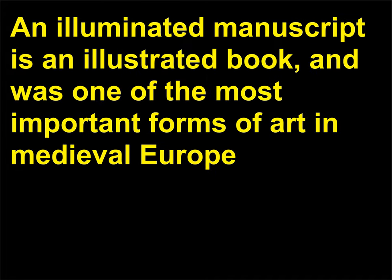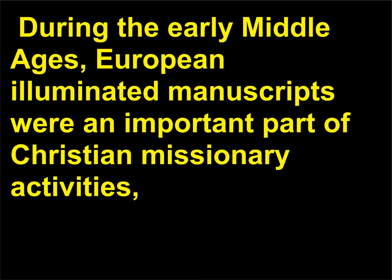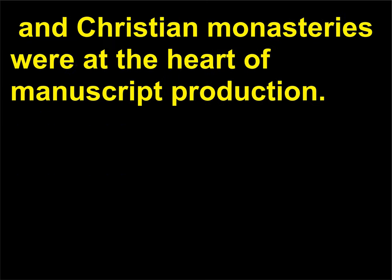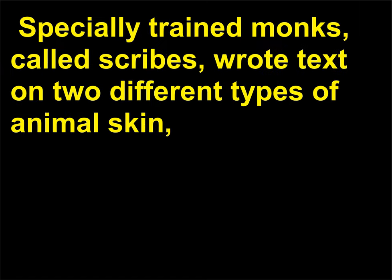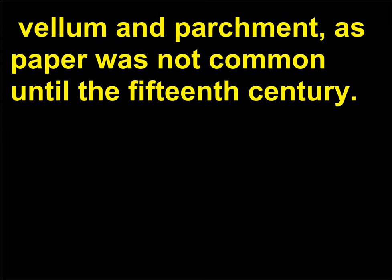An illuminated manuscript is an illustrated book and was one of the most important forms of art in medieval Europe, and elsewhere, including the Islamic Empire. During the early Middle Ages, European illuminated manuscripts were an important part of Christian missionary activities, and Christian monasteries were at the heart of manuscript production. Specially trained monks, called scribes, wrote text on two different types of animal skin: vellum and parchment, as paper was not common until the 15th century.